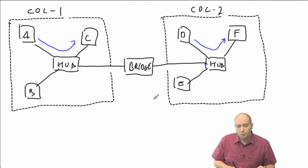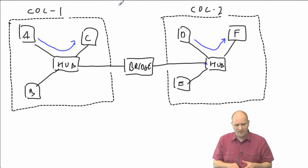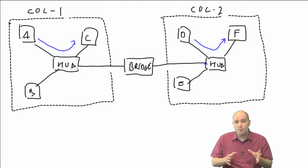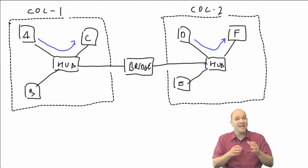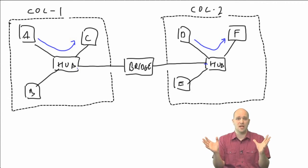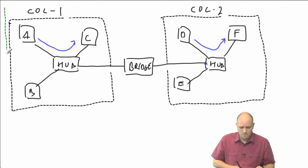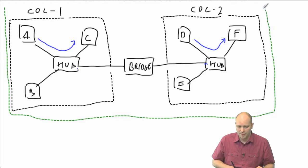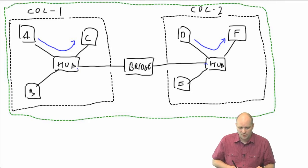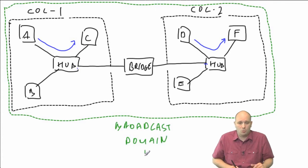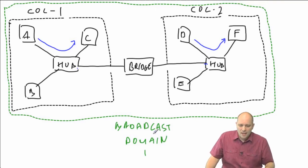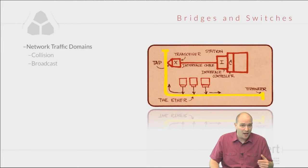In Ethernet we have special kinds of traffic. Broadcast traffic is sent from one station and designed to go to everyone in the network. Bridges are not designed to break apart broadcast domains. Even though we have created two collision domains, this is still one big broadcast domain. This is what collision domains and broadcast domains are: when one station sends a broadcast, everyone else hears it.